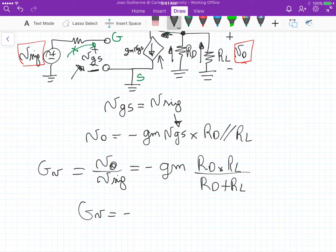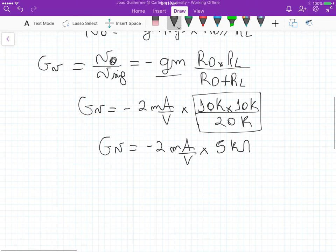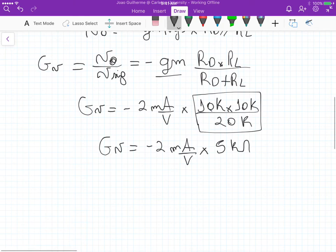So the overall voltage gain is equals to minus, and then we have 2 mA per volts for Gm, times 10 K, times 10 K, divided by 20 K, that's actually 5 K, because we have both resistance the same, so it's just half of the resistance. So the overall voltage gain is minus 2 mA per volts, times 5 K ohms, and this gives us an overall voltage gain of minus 10 volts per volt, and that's it for this problem.